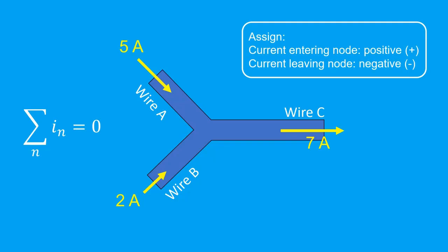So currents in wires A and B should be positive, and the current in C is negative. Recall that this sigma notation means the sum of currents both entering and leaving the node. So in this example, we take positive 5 plus positive 2 plus negative 7 giving us 0. As you can see, Kirchhoff's current law holds.